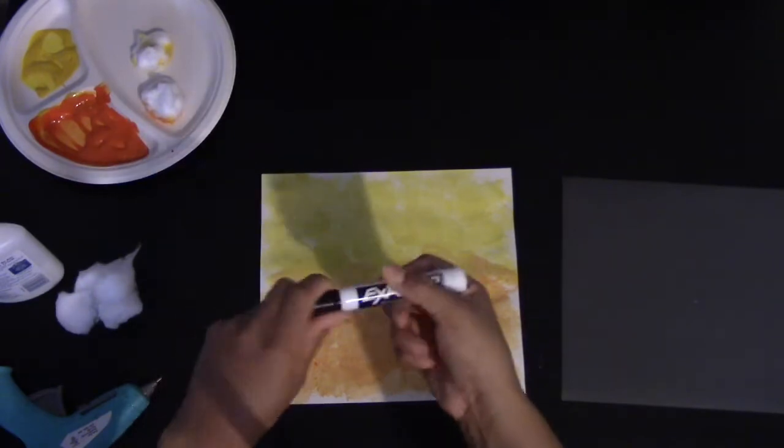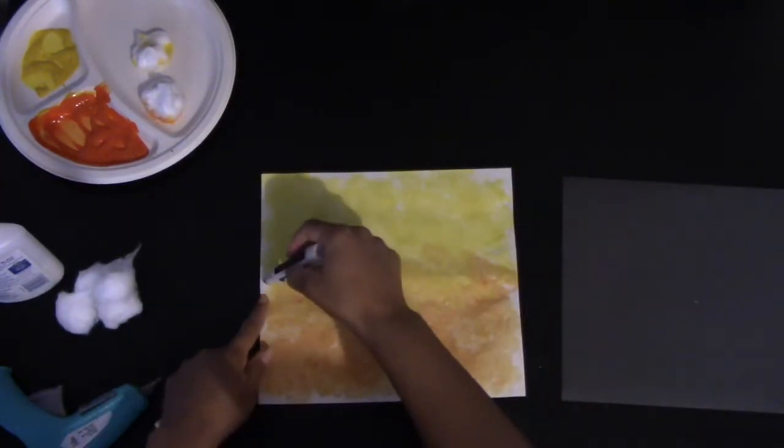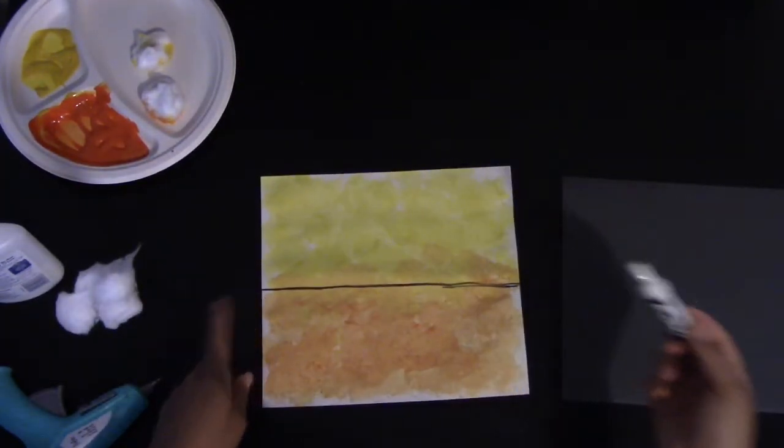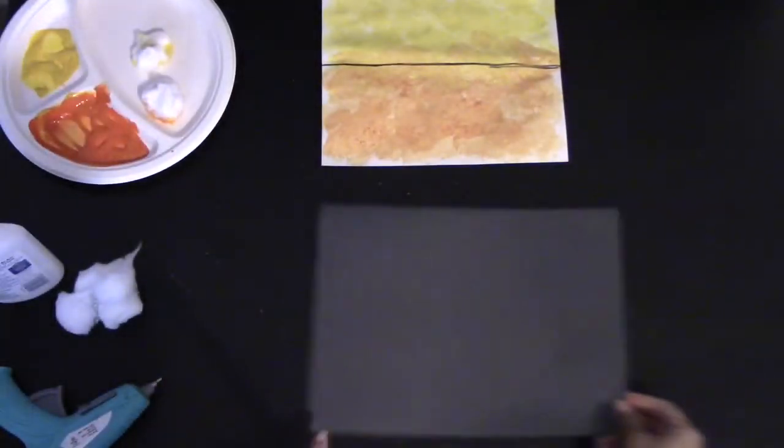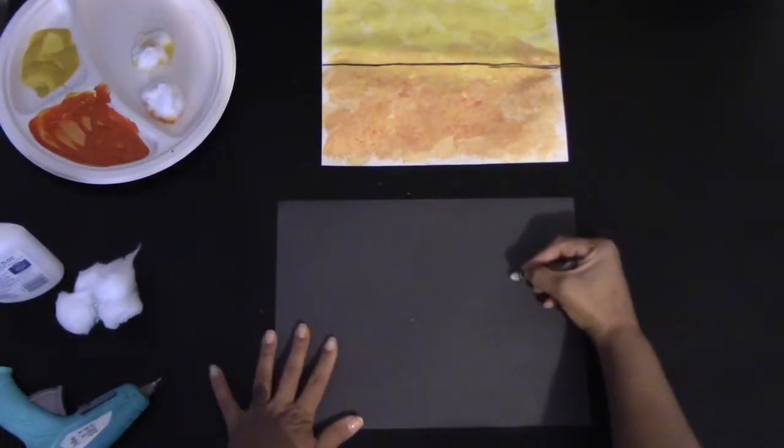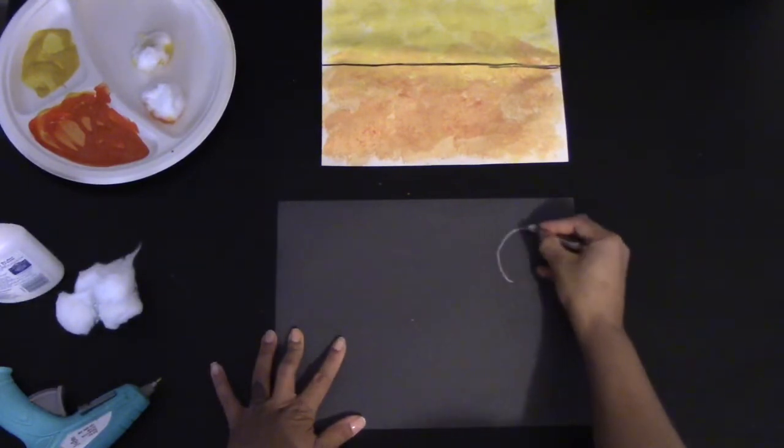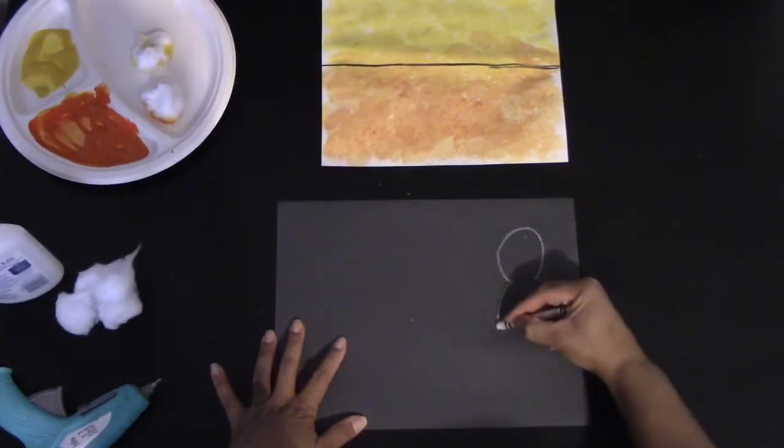Next you're going to take a black marker and draw the wire that the birds will be sitting on. Go ahead and put that to the side to dry and take your black paper and your white crayon and begin drawing the outline of three birds.